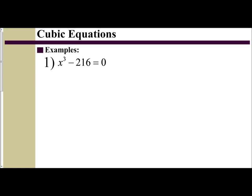In this video, we're going to look at a couple of examples on how to solve cubic equations. In this first problem, we have x cubed minus 216 equals 0. This is a difference of cubes, so we're going to use the factoring technique of A minus B times A squared plus AB plus B squared.